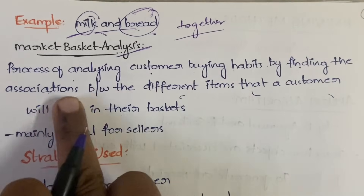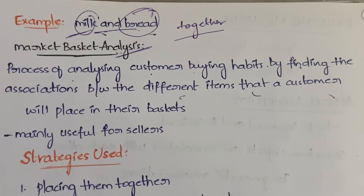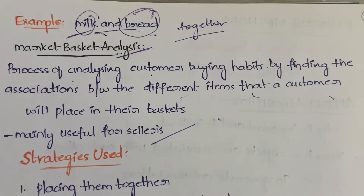Market basket analysis finds the relationship between different items a customer places in their basket. For example, if a customer places milk and bread in their basket, you identify that the customer uses both together for breakfast. This analysis is mainly useful for sellers, because they can understand the pattern of customer choices — how customers are buying things.